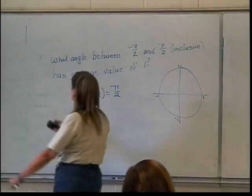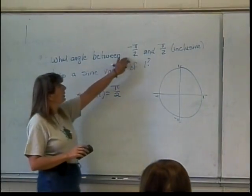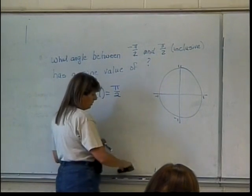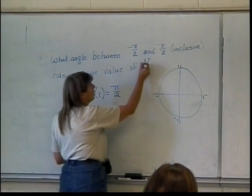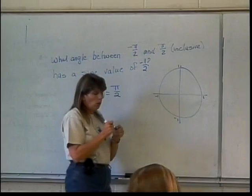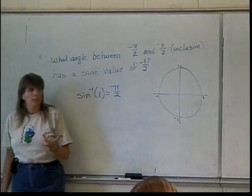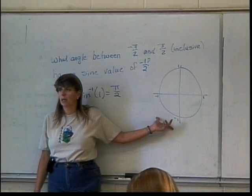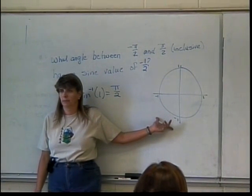So since again it's a sine inverse, it's what angle between negative pi over 2 and pi over 2 inclusive has a sine value. In this case, this is going to change to be negative 1 half. Well, here's my question. Using my unit circle, where am I going to have negative sine values?